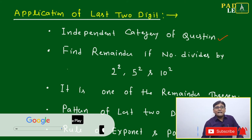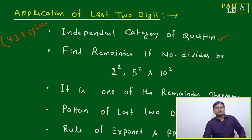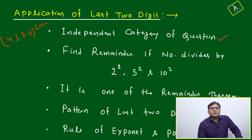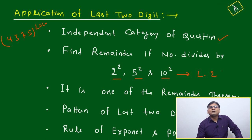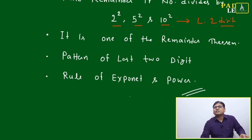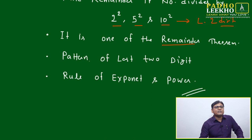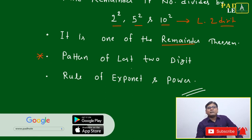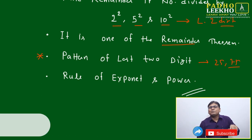The application: a question may be asked to find the last two digits of any expression, like 344375 to the power 2020. Questions can also ask for the remainder when dividing by 4, 25, or 100. Last two digits is one of the remainder theorem methods — alongside the basic remainder theorem, CRT, cyclicity, and Fermat's theorem — and the pattern here is only 25 or 75 for numbers ending with 5.